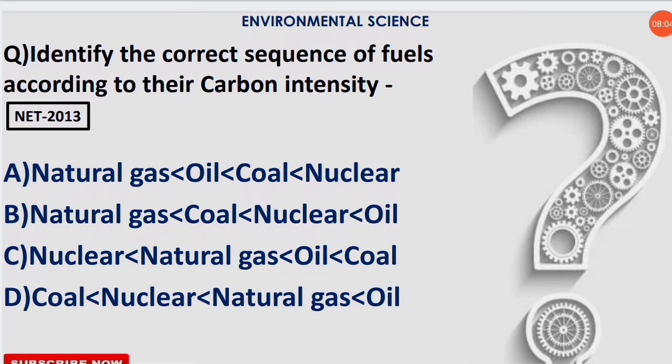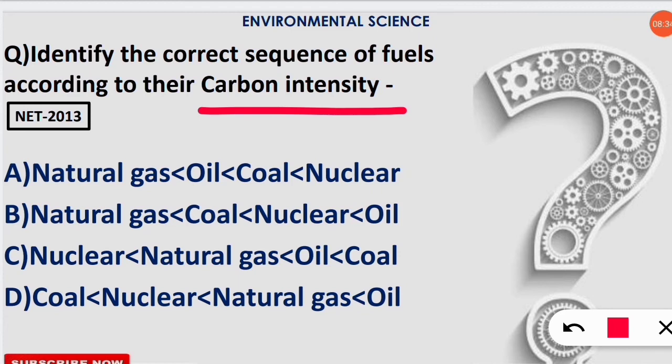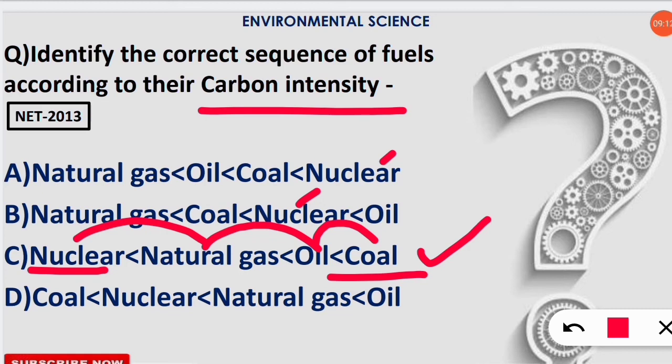The next question was asked in NET examination. Identify the correct sequence of fuels according to their carbon intensity. If you have strong basics, you can easily solve this. In nuclear fuel, very least amount of carbon is released, or you can say no carbon is released. So the first will be nuclear with least carbon intensity. Only this option has nuclear in first position; others have it in last or third position. Then the sequence is followed by natural gas, then more carbon intensity in oil, and highest is in coal. You have to remember this sequence.